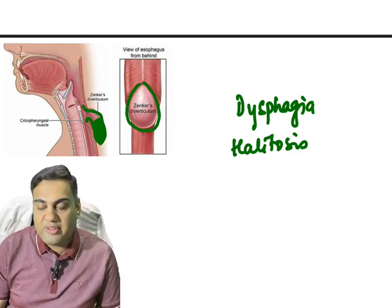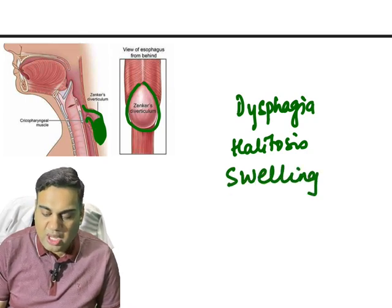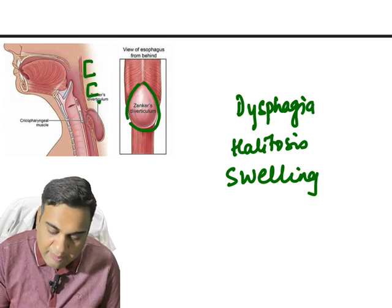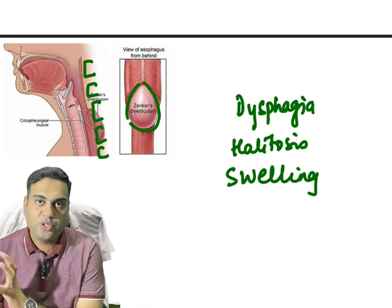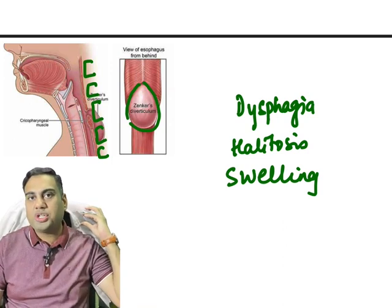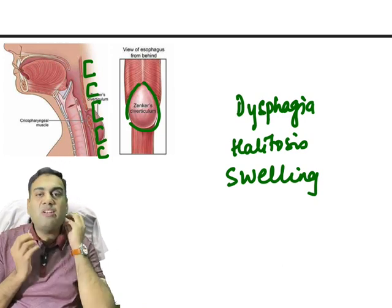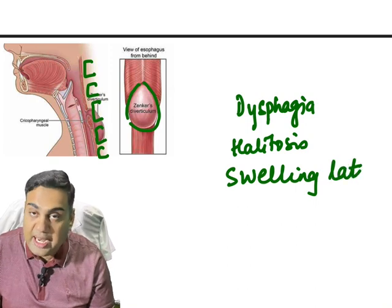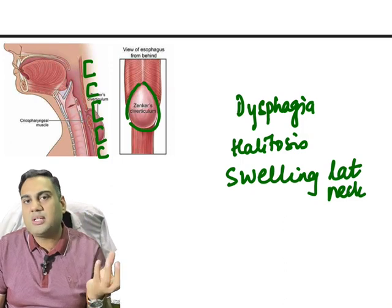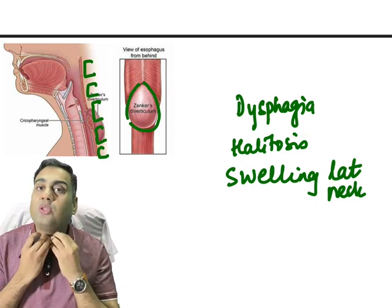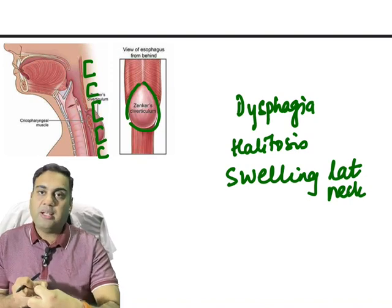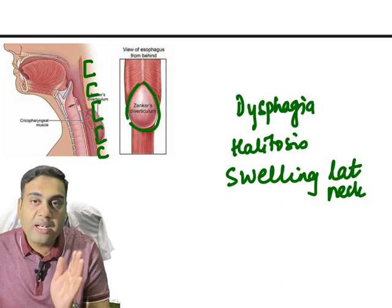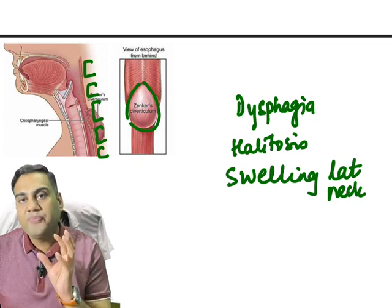Another thing this patient will have is a swelling. The diverticulum going posteriorly cannot push the vertebrae out, so the pouch will come out from the side. There is going to be a swelling in the lateral part of the neck — posterolateral swelling. This is a differential diagnosis for a lateral neck swelling; one of the causes is Zenker's diverticulum.